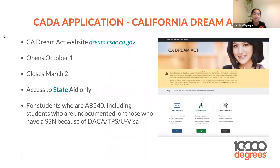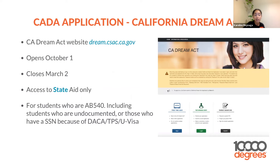Now switching to the CADA application — the California Dream Act. It has the same deadline as the FAFSA: it opens in October and closes in March. This provides access to state aid only, and is for AB 540 students — including students who are undocumented or those who have a social security number because of DACA, TPS, or U-Visa.